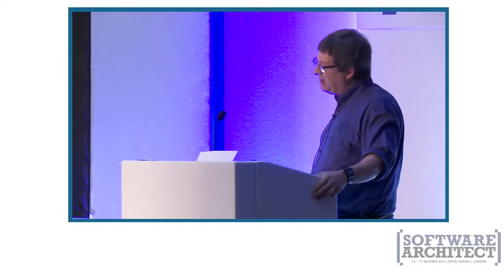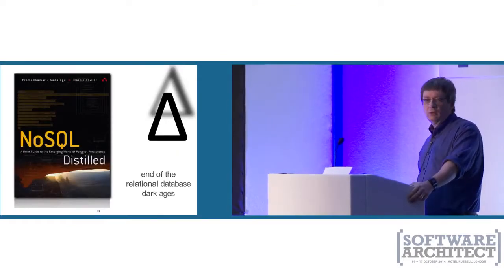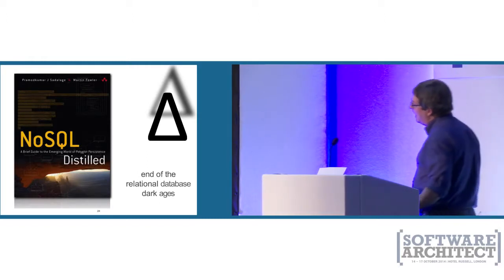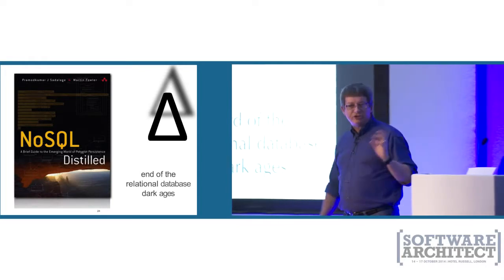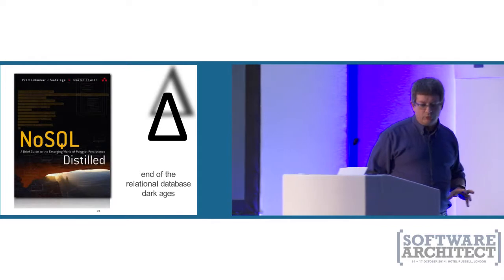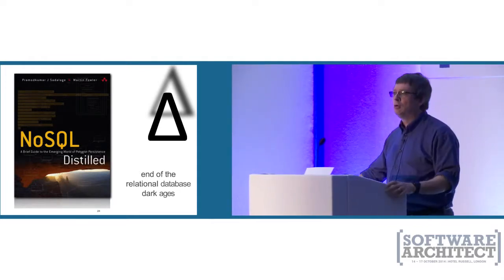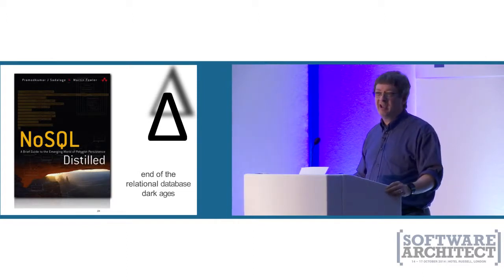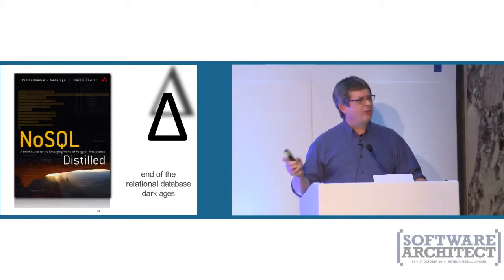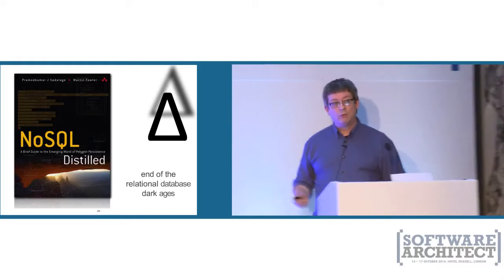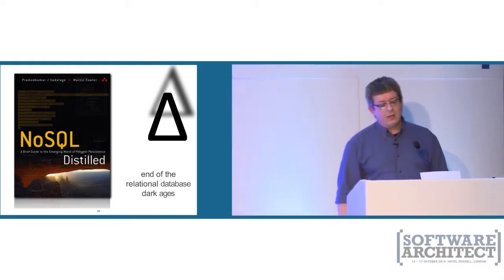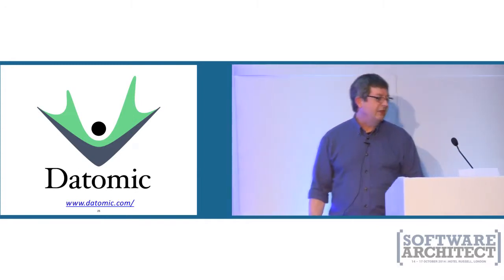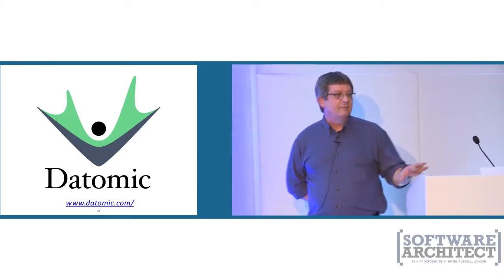Five years ago the relational database was the golden hammer — every problem looked like a nail. But now we're thinking more about different shapes of data and different kinds of tools. A client was using Oracle to create a network graph — a query finally ran in about eight and a half hours. They tried Neo4j, a graph database, and the same query ran in about a third of a second. That made them realize Oracle is not the perfect tool for every problem. Now we have a great variety of NoSQL databases, including an interesting one from the Clojure community called Datomic.